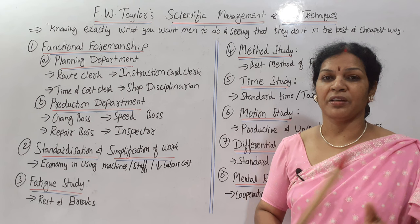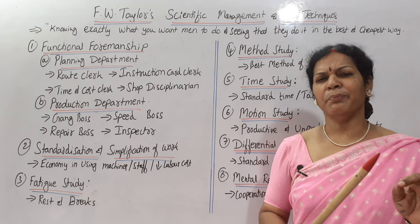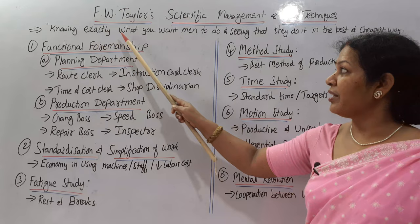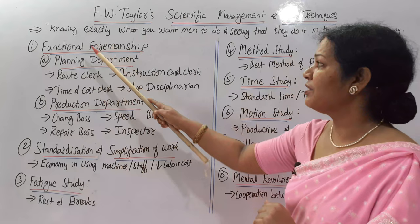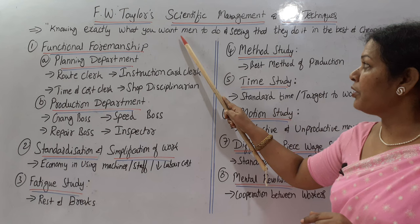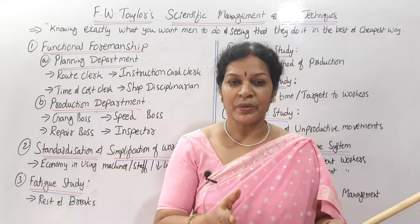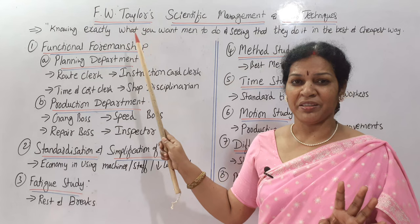Before going further, I forgot to give you the definition of scientific management. FW Taylor has given a simple definition: Scientific management means knowing exactly what you want men to do and seeing that they do it in the best and cheapest way. What you are expecting from the men working in the company — see that they do the work in the best way and cheapest way. That is scientific management — a simple definition given by FW Taylor. Please remember this, it is very important.